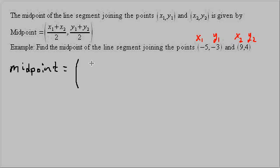I have x₁ plus x₂, which is 9, over 2. And then for the y-coordinate, I would have y₁, which is negative 3, plus y₂, which is 4, over 2.